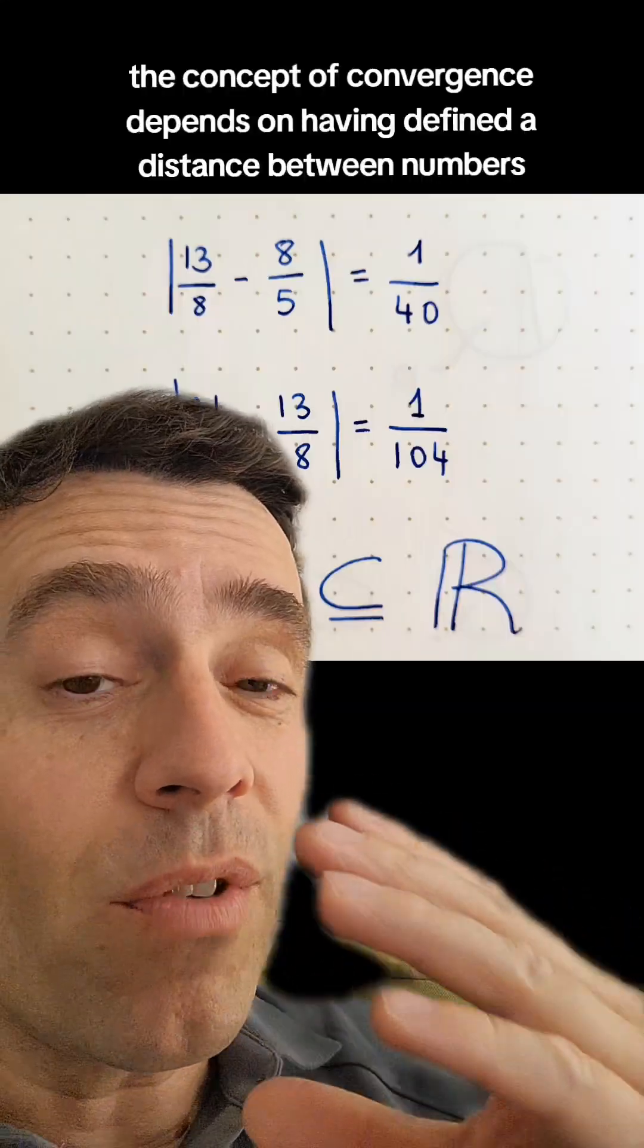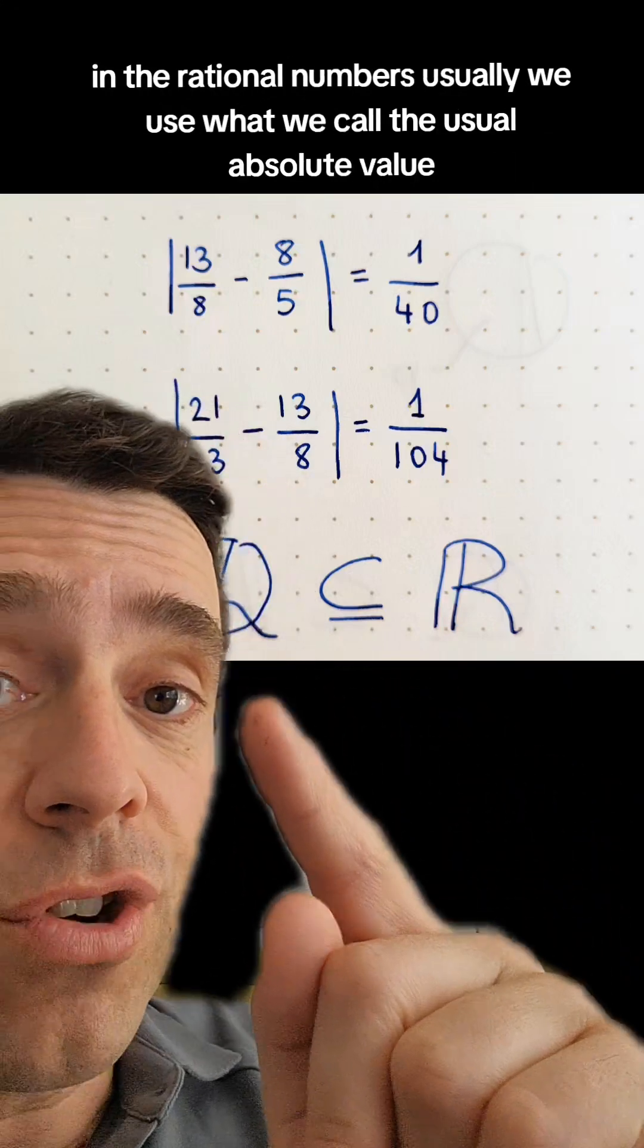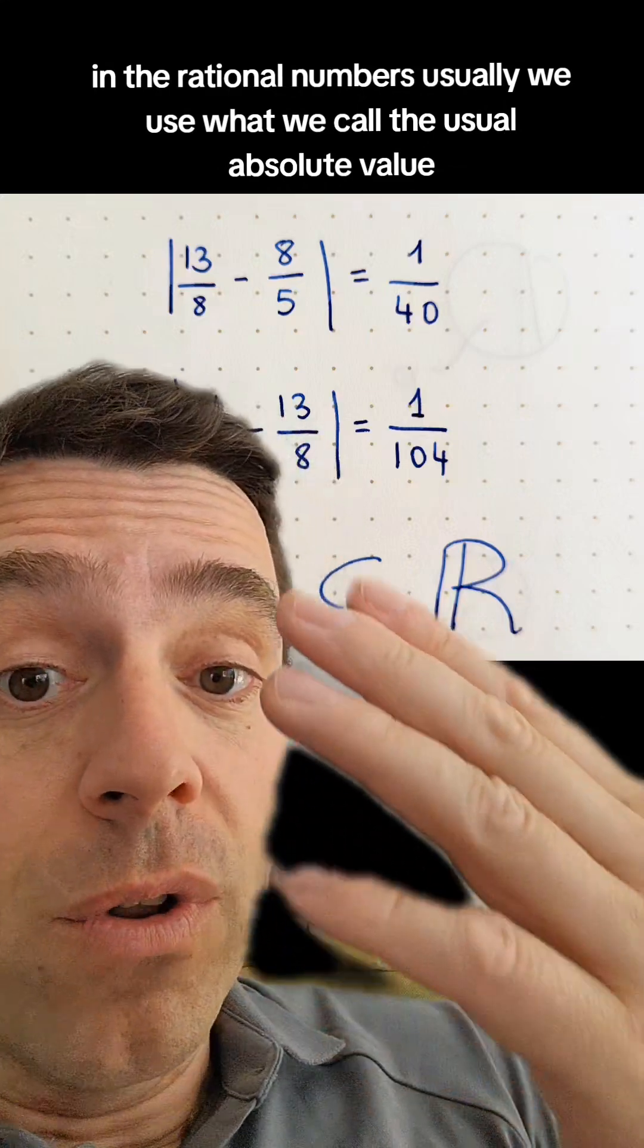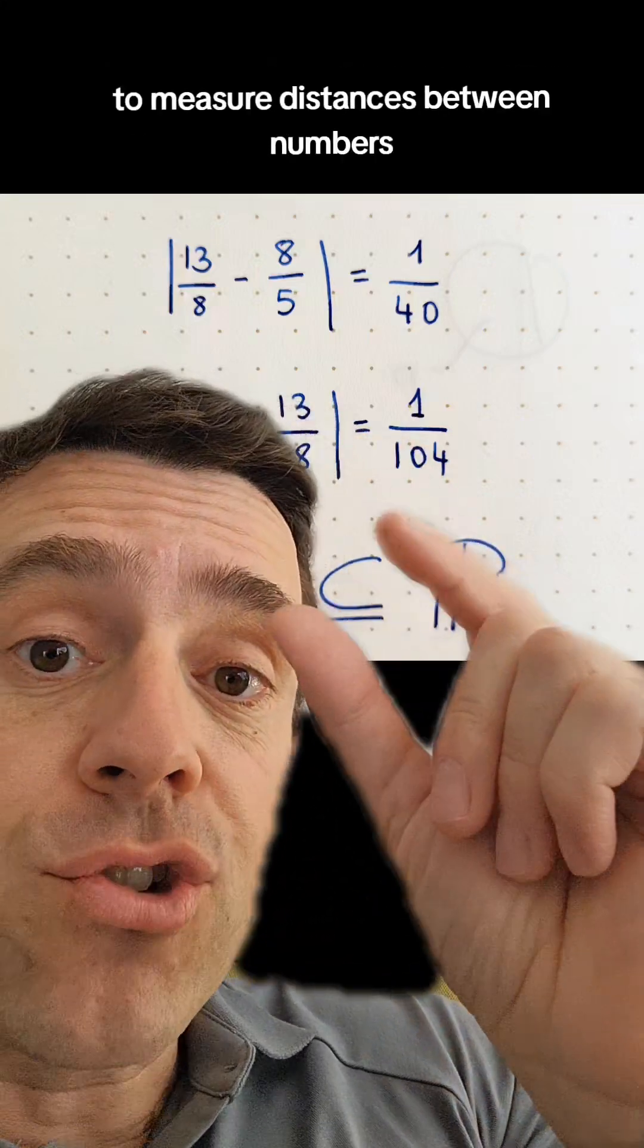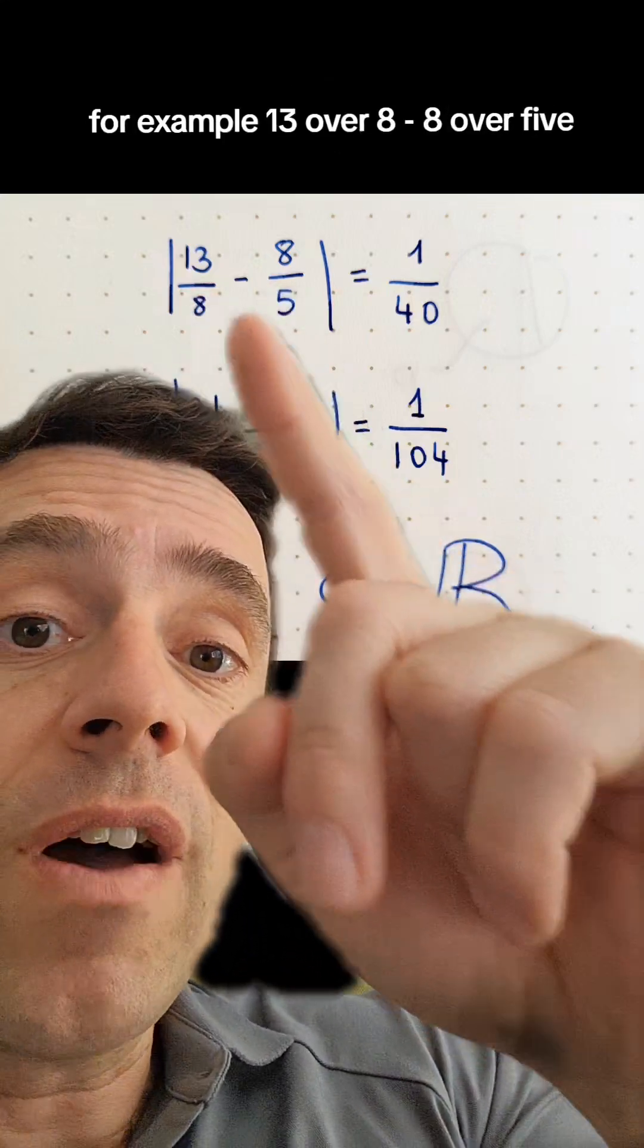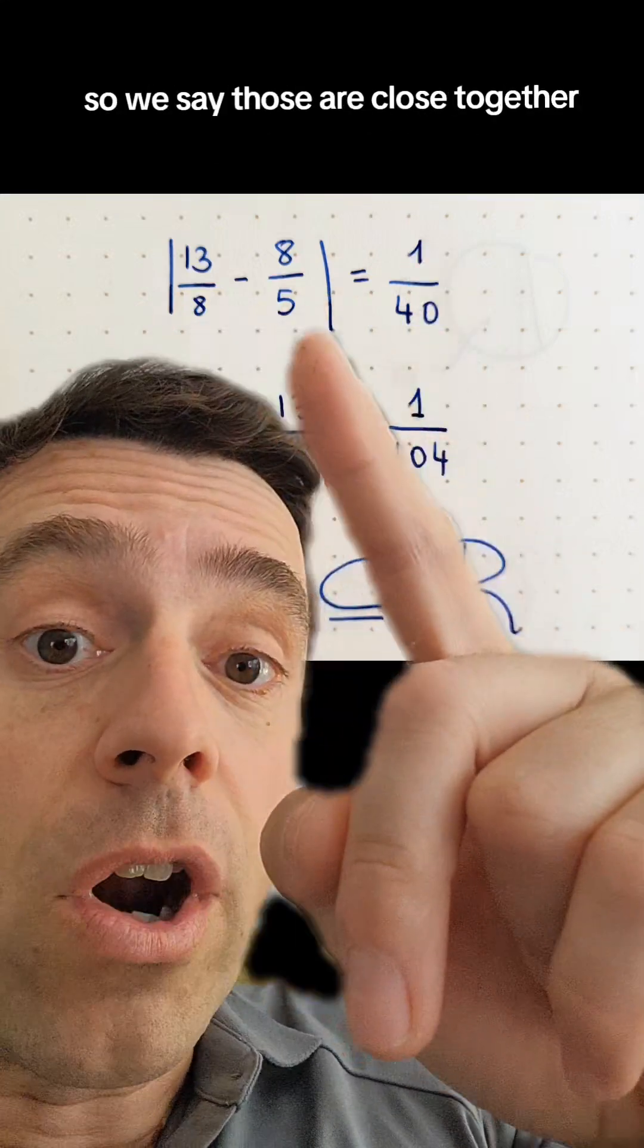The concept of convergence depends on having defined a distance between numbers in the rational numbers. Usually we use what we call the usual absolute value, which is the Euclidean metric to measure distances between numbers. For example, 13 over 8 minus 8 over 5, we take the absolute value of the difference, that's 1 over 40, so we say those are close together.